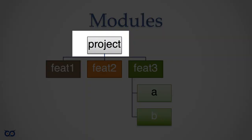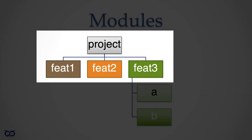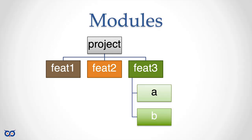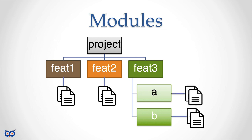Let's look at a diagram. Say we have a project we want to work on, and we can break this project up into several features. These features can be packages — there's no reason why we can't develop a feature as a package. The way I break up my application, I can also mirror this with a directory structure. Feature three, for example, can be broken down into sub-features, which can be sub-packages or sub-directories.